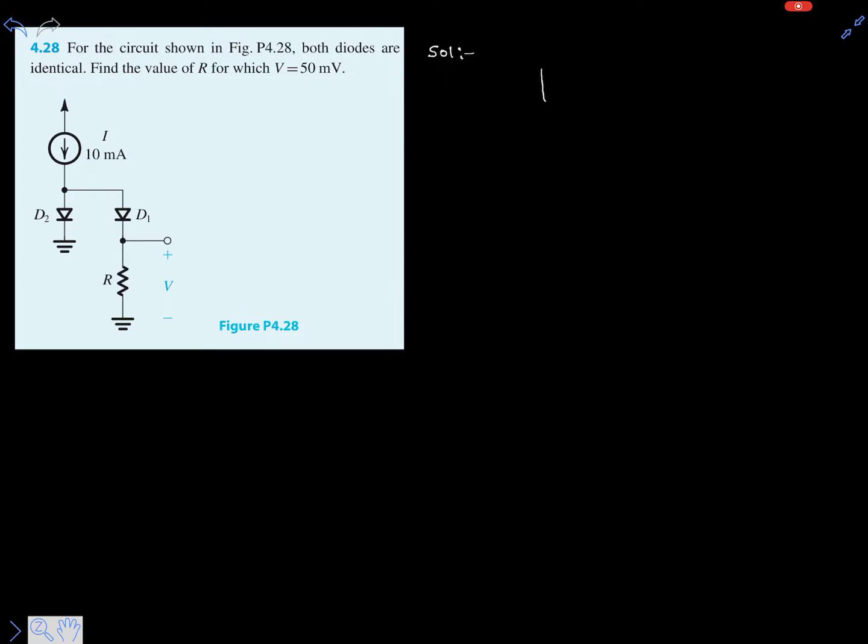Let's redraw the circuit. Here 10 milliamps current is flowing downwards. This is diode D2, let's say this voltage across the diode is VD2. And this is diode D1, let's say this is VD1.